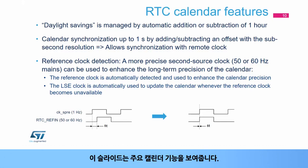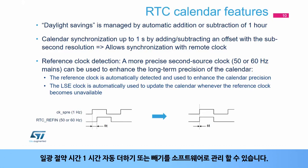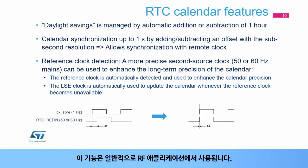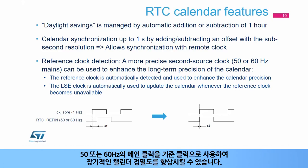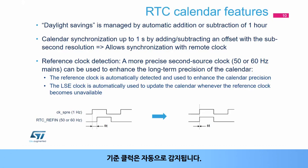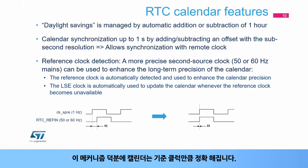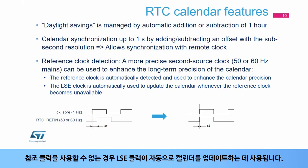This slide presents the main calendar features. Daylight savings can be managed by software with automatic one-hour addition or subtraction. It is possible to synchronize the RTC clock to a remote clock by adding or subtracting an offset to the sub-second register on the fly with CKA pre-clock resolution. A reference clock at mains frequency of 50 or 60 Hz can be used to enhance long-term calendar precision. The reference clock is automatically detected. When the 1 Hz clock becomes misaligned due to LSE imprecision, the RTC shifts the 1 Hz clock so that future edges are aligned, making the calendar as precise as the reference clock. When the reference clock is not available, the LSE clock is automatically used.